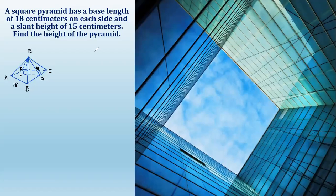A square pyramid has a base length of 18 centimeters on each side and a slant height of 15 centimeters. Find the height of the pyramid.